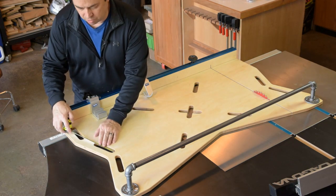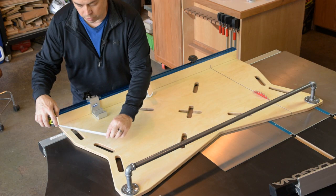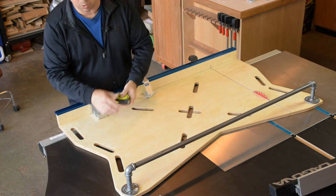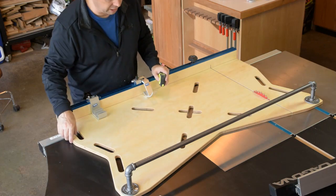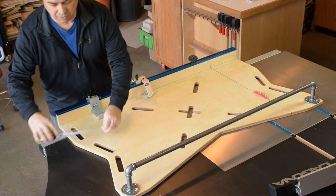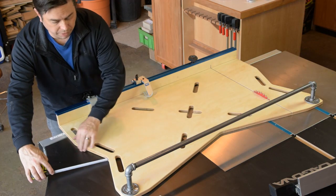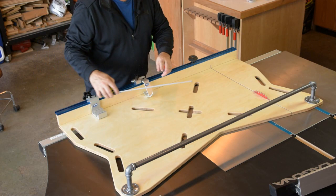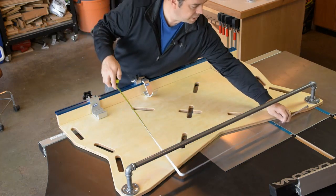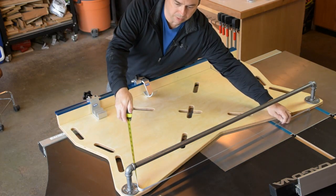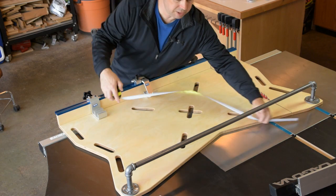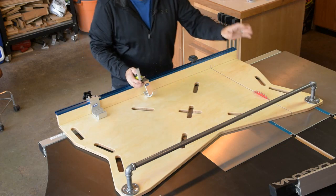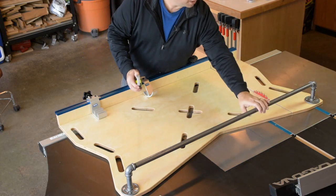These hand holes are 4 and 3 quarters by a little over an inch wide, and I've spaced them an inch and a quarter from the side of the sled. These cutouts here remove about 3 inches, and this cutout spans about 16 inches. This cutout here spans about 39 inches, and it removes about 5 inches of material.